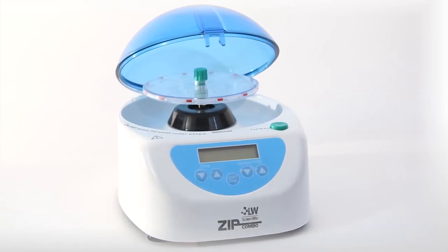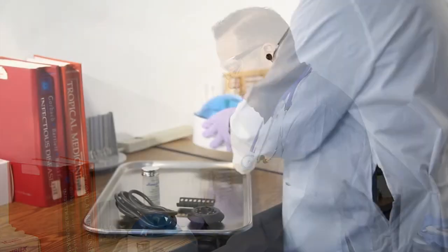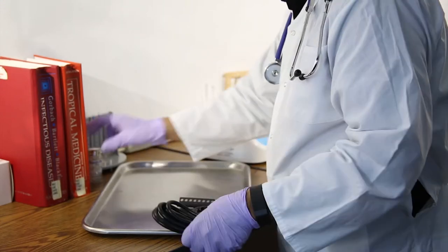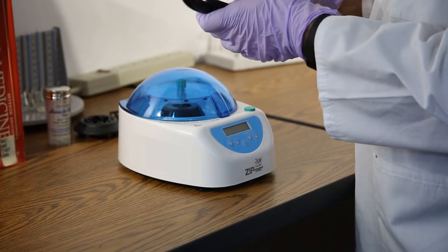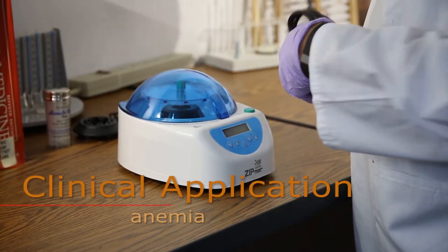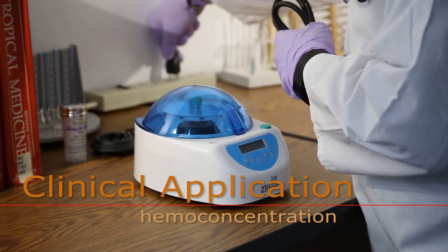Hematocrit centrifuge. The hematocrit is a measurement of the ratio of the volume of red blood cells to the volume of whole blood in a sample of capillary or venous blood following centrifugation. The hematocrit is used to detect anemia, polycythemia, hemodilution, or hemoconcentration.